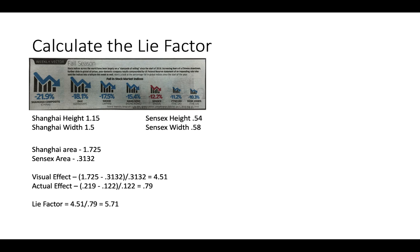The first thing we do is we calculate the area. For Shanghai, it's 1.725. It's 1.5 times 1.15. The Sensex area is 0.54 times 0.58. And it's 0.3132. The visual effect is 4.51 times smaller. So Sensex is 4.51 times smaller than Shanghai. The actual effect is that Shanghai is 0.79 or 79% bigger. We take 4.51. We divide it by 0.79. And we get 5.71. So the lie factor in this graph is 5.71.